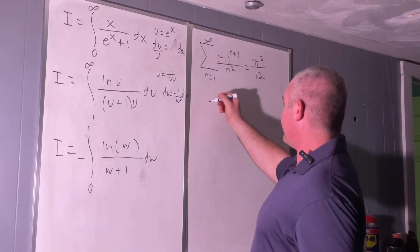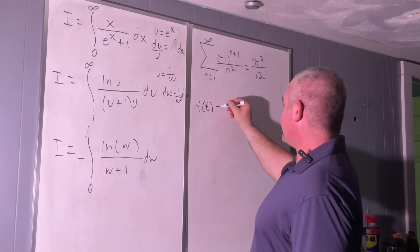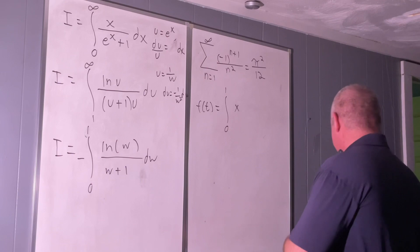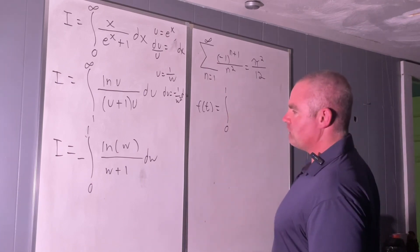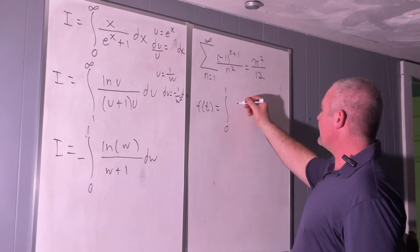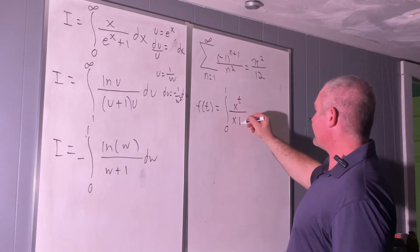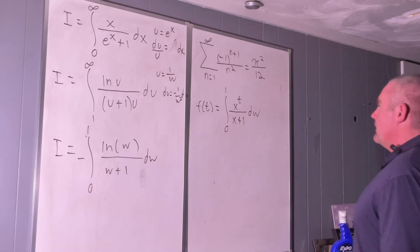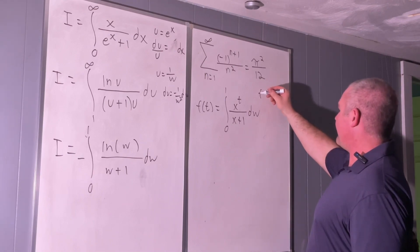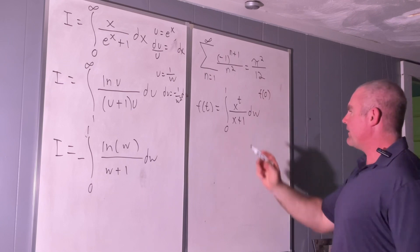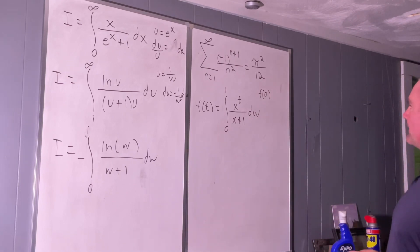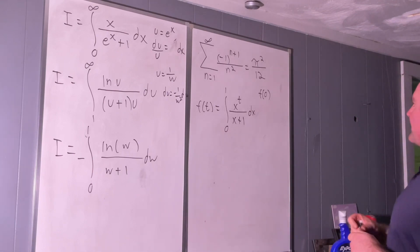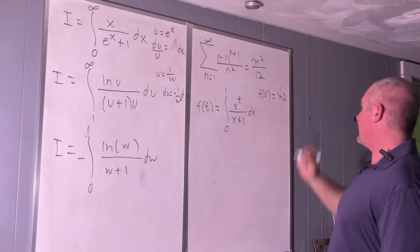So, let's create a function of t that is equal to the integral from zero to one of x to the t over x plus one dx. Okay. Well, let's see. That means that f evaluated at zero would give us integral zero to one of one over x plus one dx. So that would just be natural log of two.